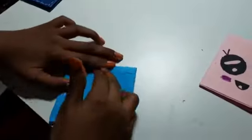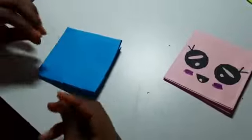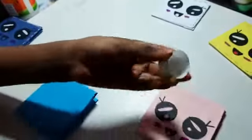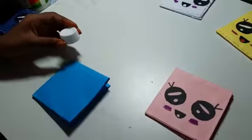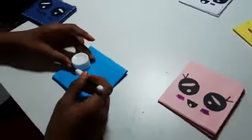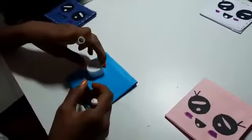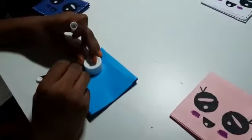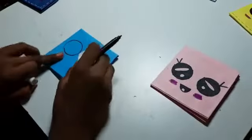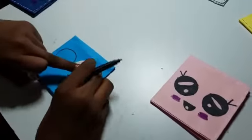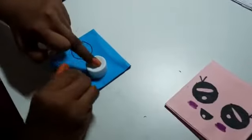So now I am going to decorate it. I am going to take a circular object, so I am taking this cap, and then I am going to take the black sketch pen and outline it. I am marking the circle for the eyes, same for this side.